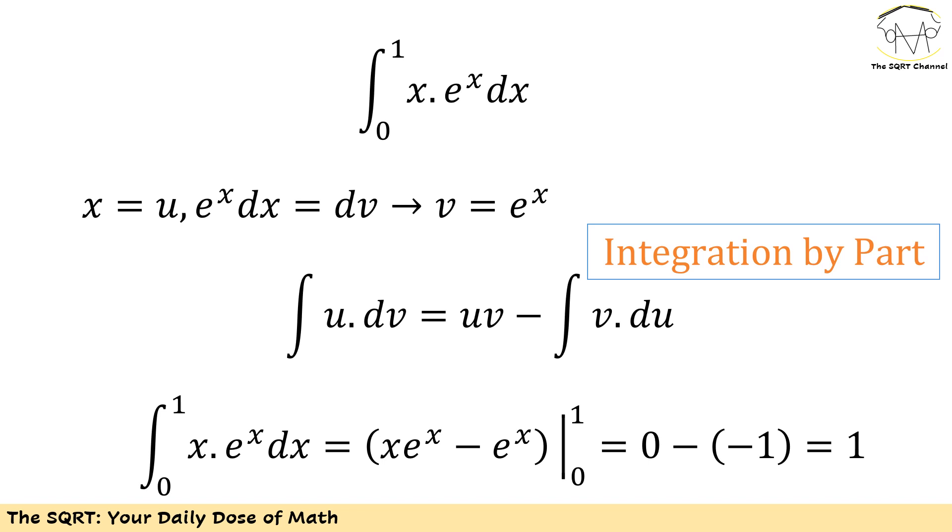When x is 1, then x e to the power of x minus e to the power of x is going to be 0. When x is 0, I'm going to have negative 1 here. Altogether, 0 minus negative 1 is going to be 1, and that's our final answer.